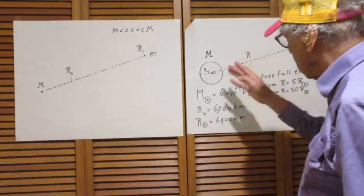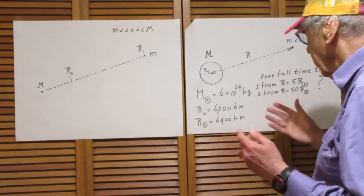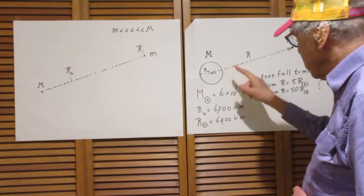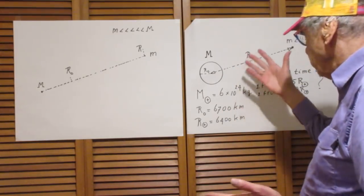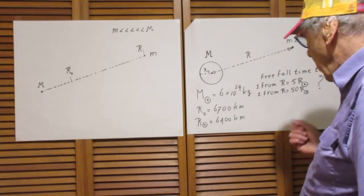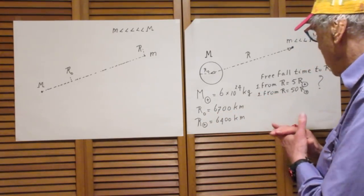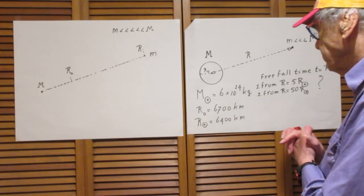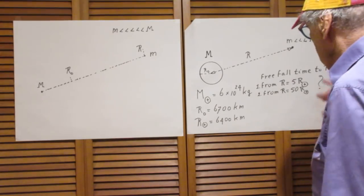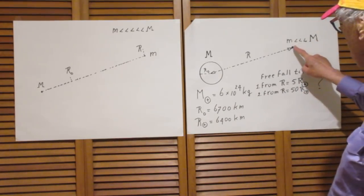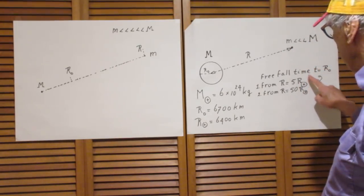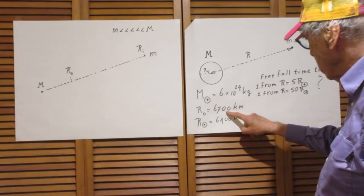And I want to know how long it takes for that object to reach the top of the Earth's atmosphere. Because once you get closer to the Earth, of course, you get air drag due to the Earth's atmosphere. And so the Earth's atmosphere is about 300 kilometers high, varying roughly. So R0 is then 6700 kilometers.